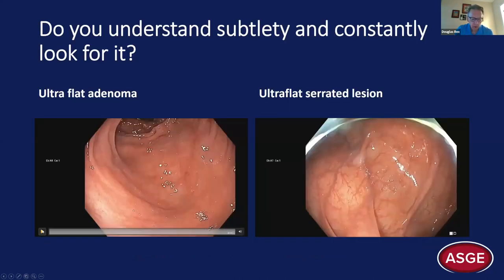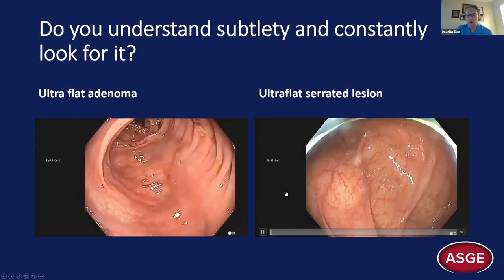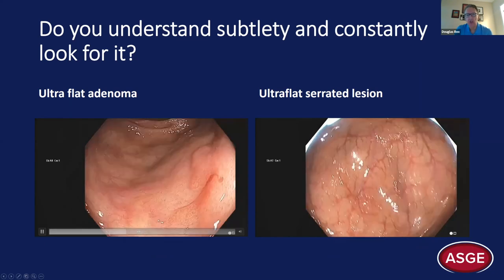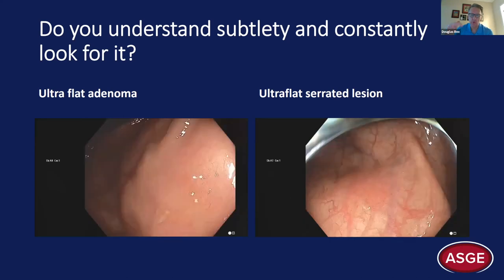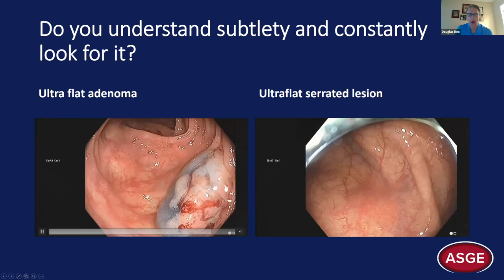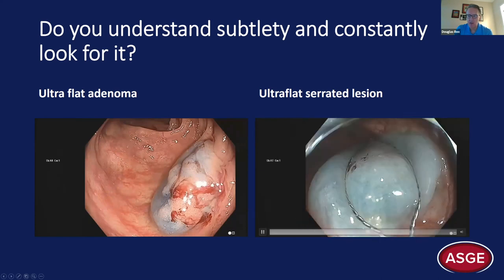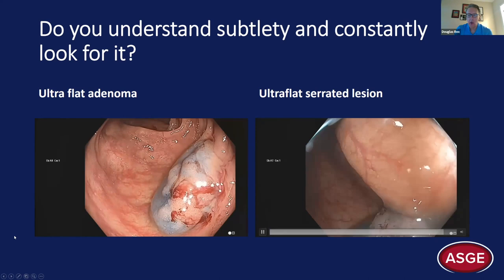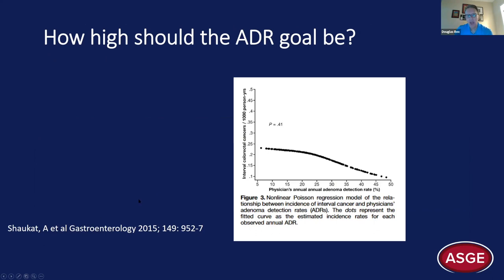On the left is a very flat conventional adenoma and on the right a very flat serrated lesion. To detect these you have to approach the procedure with a sense that you're looking for very subtle changes in color, texture of the mucosa, disruption of the vascular pattern, and shape. The adenoma on the left appears better after injection. The flat serrated lesion on the right is probably Paris class 2b — truly flat. Most truly flat lesions I've seen in the colon are serrated lesions.